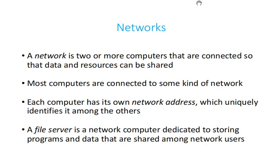In this part we get to talk about networks and the kinds of software that we have. A network is basically two or more computers that are connected so that data and resources can be shared. Most computers are connected to some kind of network. Each computer has its own network address which uniquely identifies it. A file server is a network computer dedicated to storing programs and data shared among network users.